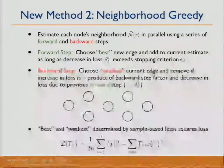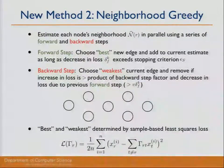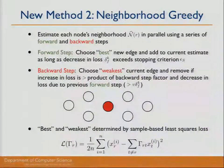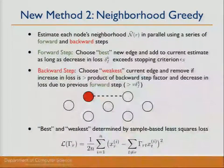The second method is neighborhood greedy — the greedy counterpart to neighborhood lasso. We estimate each node's neighborhood in parallel using forward and backward steps with a sample-based least squares loss. For the red center node, we perform a forward step, add an edge, perform a backward step that decides not to remove it, then another forward step, another backward step, until the forward step breaks. That becomes the neighborhood for this node. We repeat for all nodes and combine the neighborhoods to get our full structure estimate.